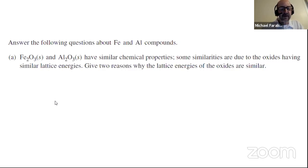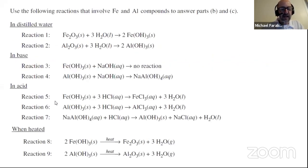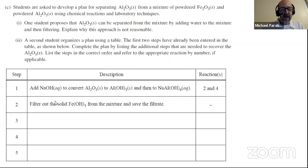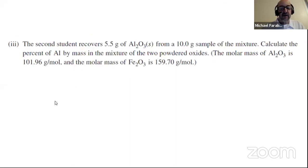This is part A. There is also a part B and a part C. They give you many different reactions involving iron and aluminum compounds to answer parts B and C. Part B has two subparts, and part C has parts 1, 2, and 3. At this point, pause the video, go ahead and solve the problem, and then when you're ready press play to check your answers.